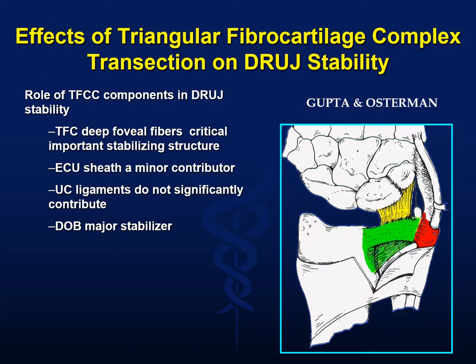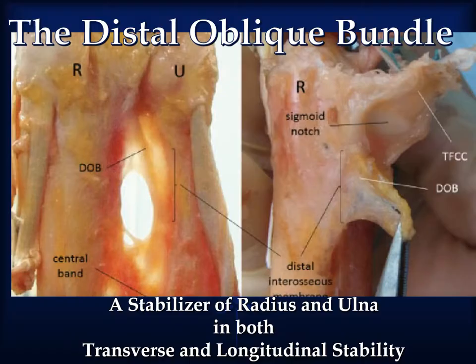Sectioning studies of the triangular fibrocartilage complex have shown the major stabilizers are the triangular fibrocartilage deep foveal fibers and the distal oblique bundle. The ulnar extrinsic ligaments play no role in distal radial ulnar joint stability. The distal oblique bundle plays a major role not only in transverse stability but in longitudinal stability.